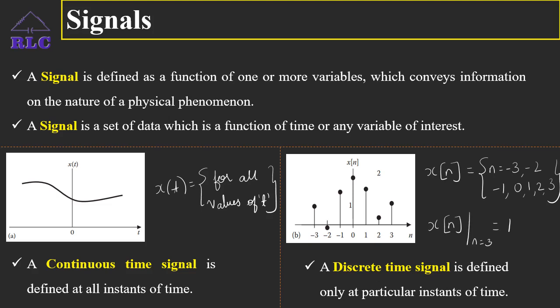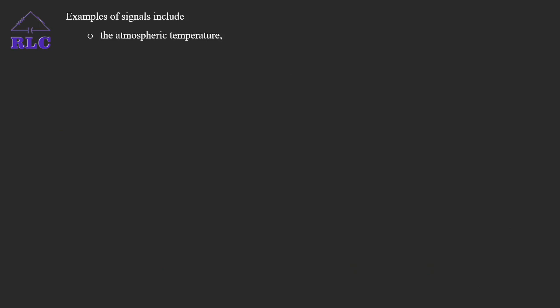Whereas a continuous time signal is defined at all instances of time. Examples of signals include the atmospheric temperature which gives information about the surrounding heat levels, humidity signals which gives information about the surrounding moisture content, human voice or speech signals which carries some kind of information, images and chirping of birds, etc. All these are examples of signals.